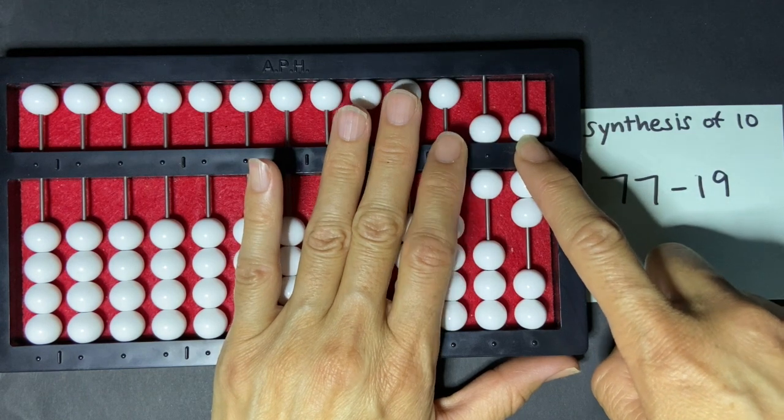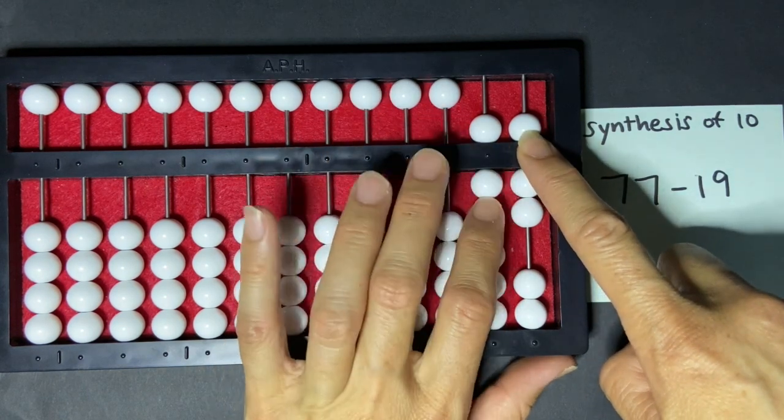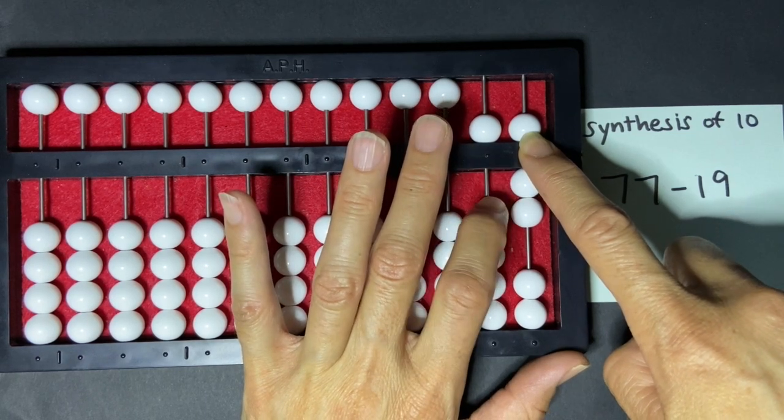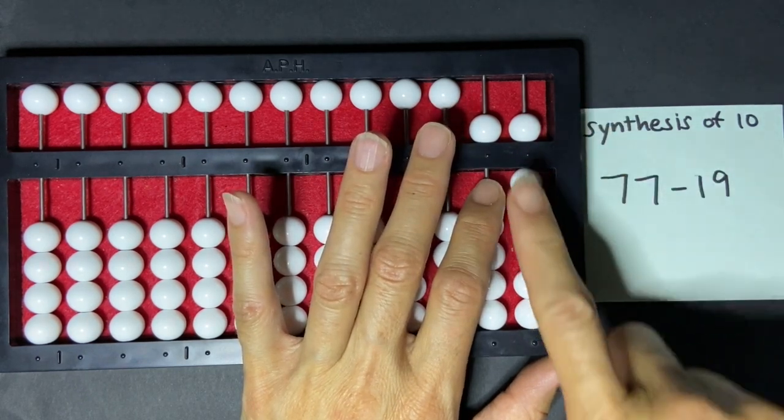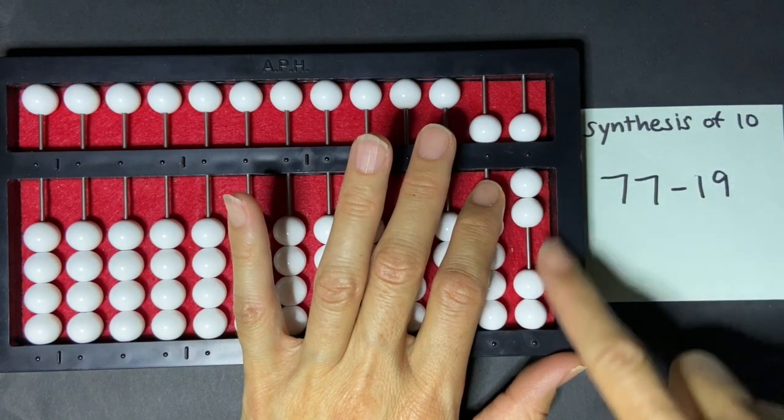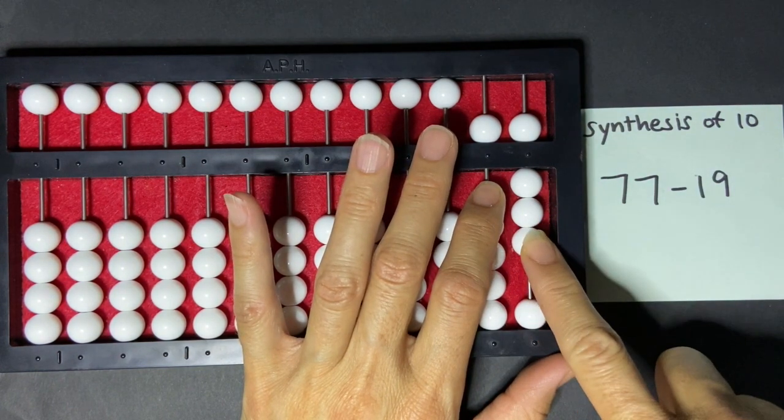So I'm going to go next door here to the 10's rod and I'm going to clear 10. But that was 1 too many because I only needed to clear 9, so I'm going to return 1 bead in the units column.